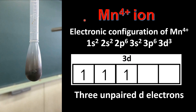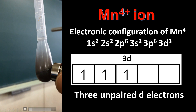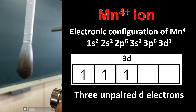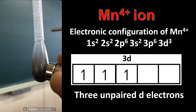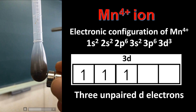Next we'll look at the Mn⁴⁺ ion. Here we have the electronic configuration of the Mn⁴⁺ ion and as you can see it has three unpaired d electrons. And once again if we introduce an external magnetic field you can see there is a strong attraction between the magnet and the sample of manganese dioxide.